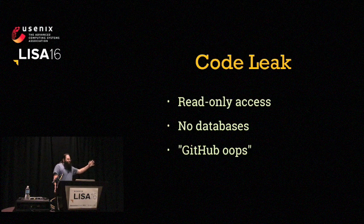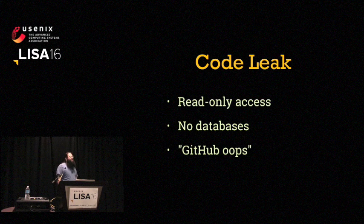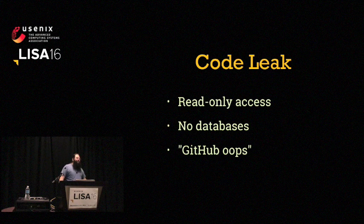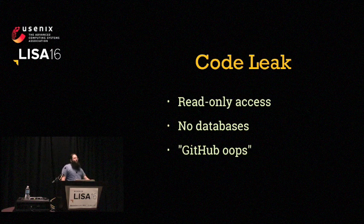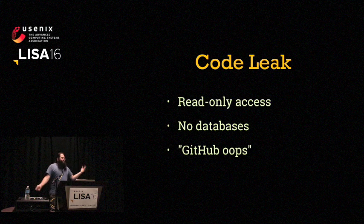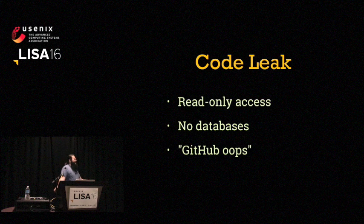First up on the more reasonable attack surfaces is a code leak. These can happen subtly over time, usually through incorrectly configured error pages that let people see your source code or your paths. But every now and then you'll get a GitHub oops where someone pushes to the wrong repository. Fortunately, this shouldn't be a big deal — we all know we shouldn't be hard-coding passwords into source files. Somebody having access to our source code might be bad for the business, but hopefully it won't be a big deal from a security point of view.